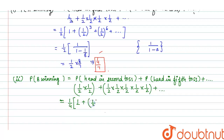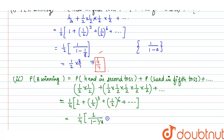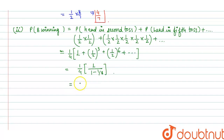Taking (1/4) as common, we get (1/4) × [1 + (1/2)^3 + (1/2)^6 + ...]. This is also a GP. Applying the formula: (1/4) × (1 / (1 - 1/8)) = (1/4) × (8/7) = 2/7. So the probability of B winning is 2/7.